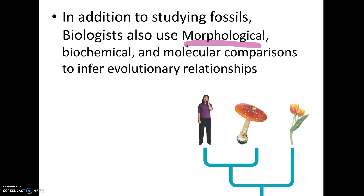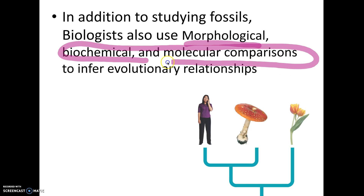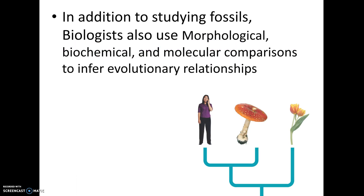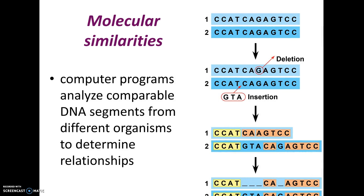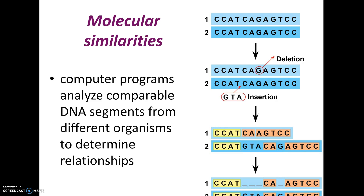But more and more today, we look at biochemical and molecular comparisons. We can feed DNA sequences into computers, and the computers can pull up how much of the DNA organisms have in common. We can analyze two DNA sequences, line them up, and see if sequences are the same or if there's a deletion, an insertion, or a frame shift. These DNA sequences show mutations and can tell a story we can build trees from. The more DNA they have in common, the more amino acids they make similarly — we can assume they're probably more closely related.